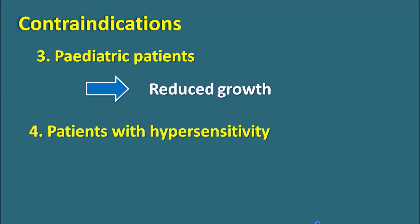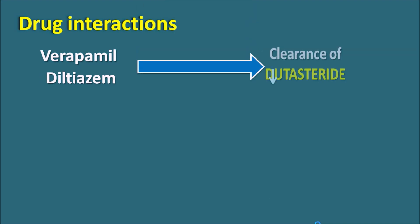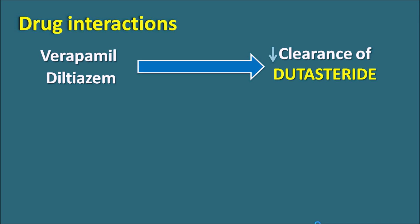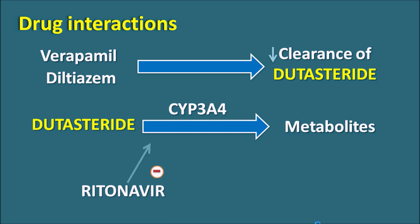The fourth contraindication is patients with hypersensitivity to dutasteride. Regarding drug interactions, calcium channel blockers like verapamil and diltiazem can reduce the clearance of dutasteride and should be used carefully together. Dutasteride is metabolized by CYP3A4 enzyme, and strong CYP3A4 inhibitors like ritonavir can inhibit its metabolism, thereby increasing drug levels.